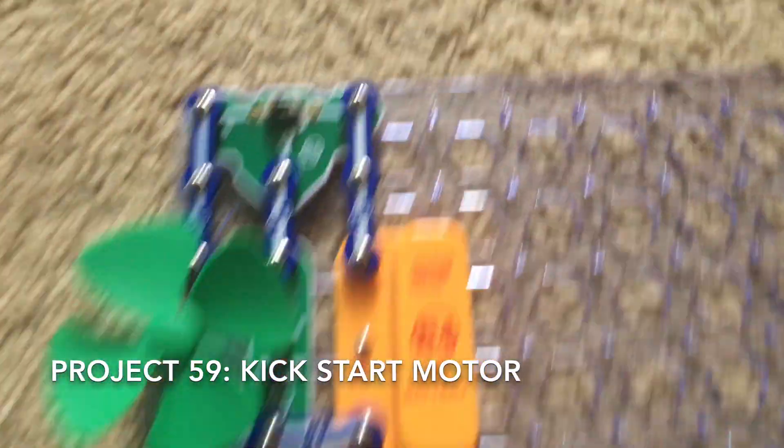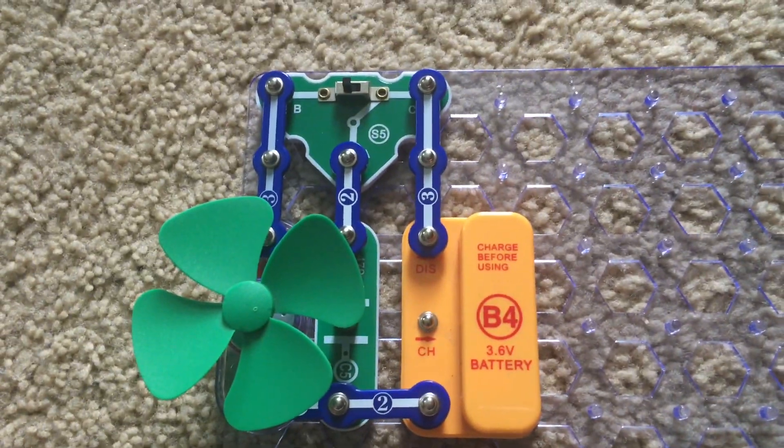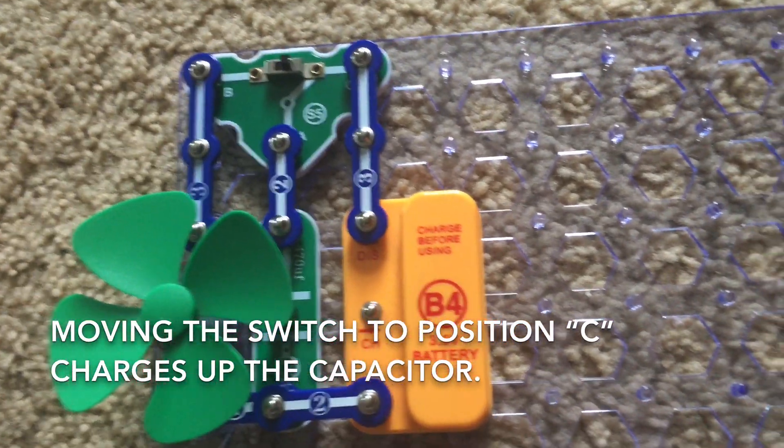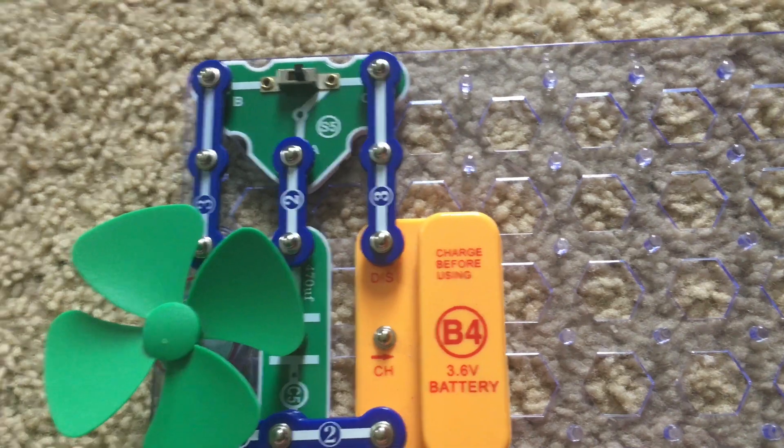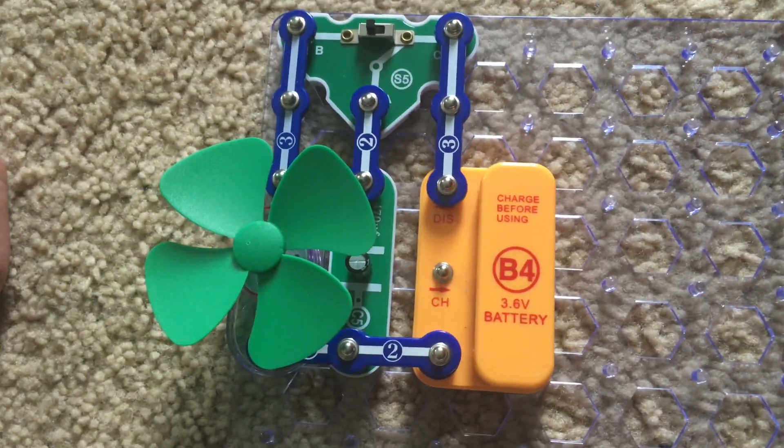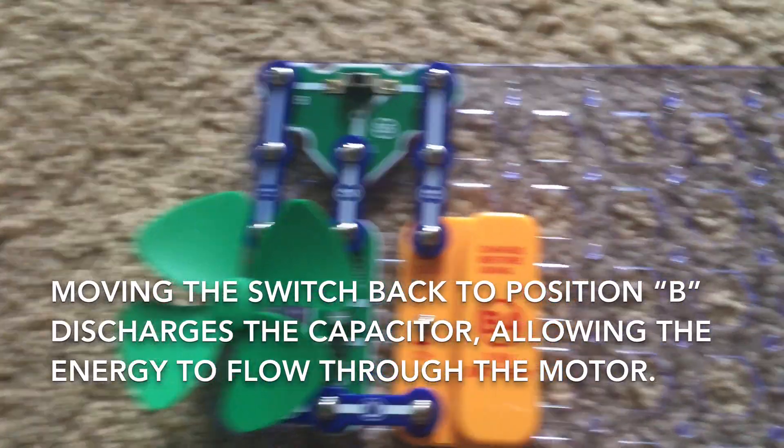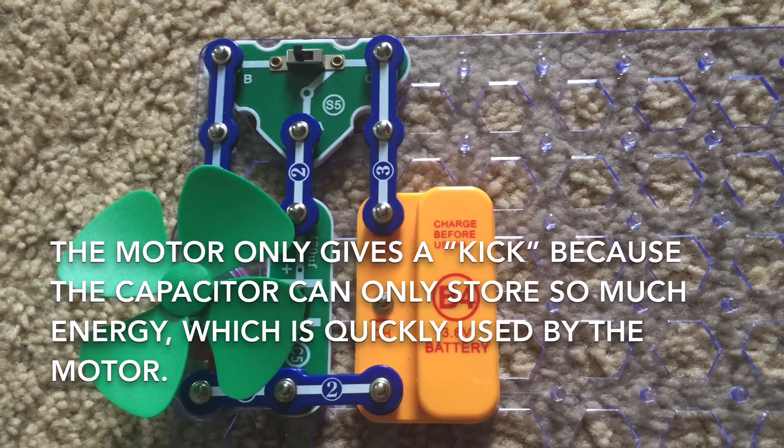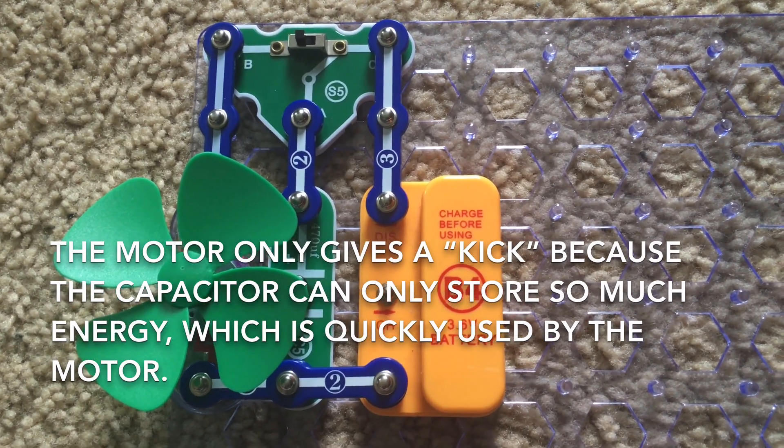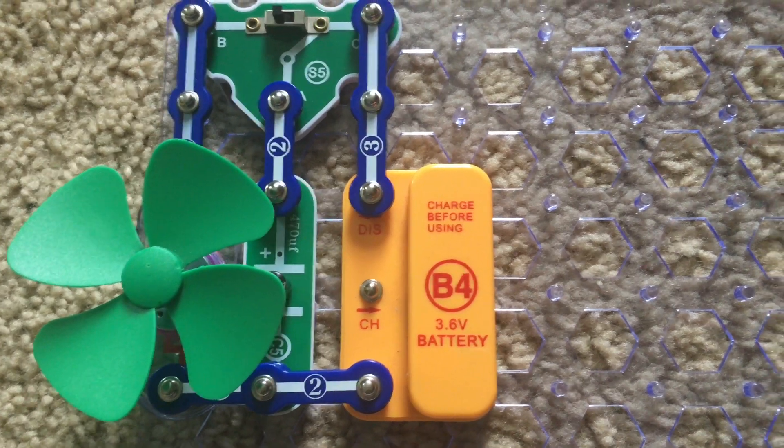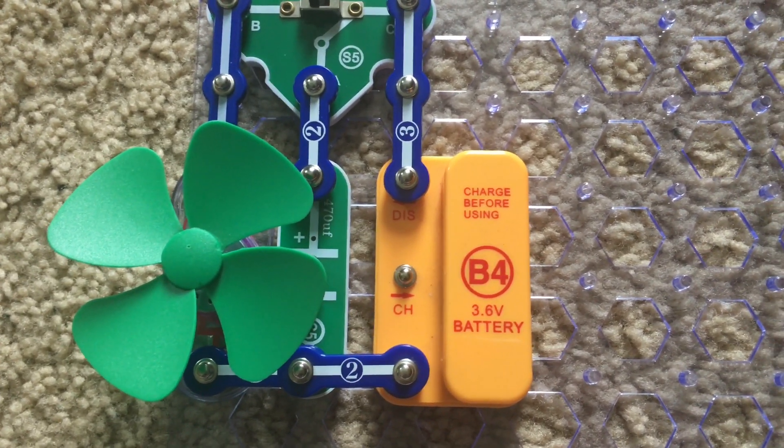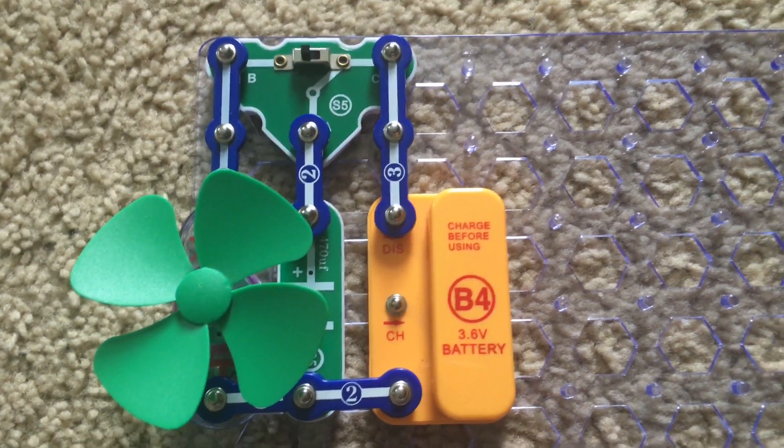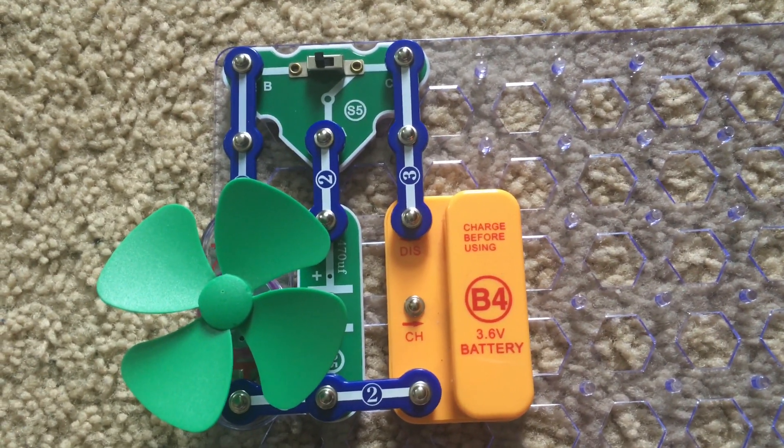Here is kickstart motor. This project is pretty simple yet interesting. We will move the slide switch over to position C, and that will charge up the C5 capacitor. Then when I move the switch back to position B, the motor will spin on its own a brief moment. Let's do this again. That's because the capacitor can only store a very small amount of energy, and therefore can only give the motor a very tiny spin, like a little kick. But if I had a much larger capacitor, the motor could spin longer and faster.